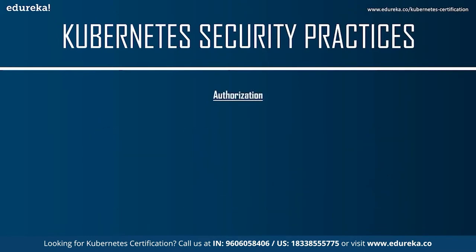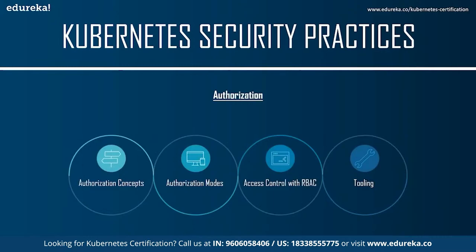Moving on to the next Kubernetes security practice: authorization. Authorization is assigning permissions to users and applications — Kubernetes verifies whether a certain action is allowed by a certain user or application, and if allowed it performs that action, otherwise it rejects it and potentially logs the attempt. Kubernetes authorizes API requests by using the API server, evaluating request attributes against policies, and subsequently allowing or denying the request. By default, permissions are denied unless explicitly allowed by a policy.